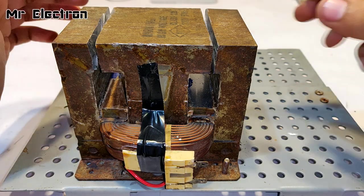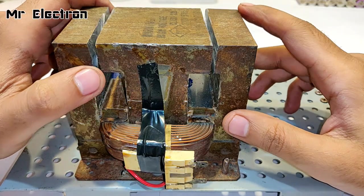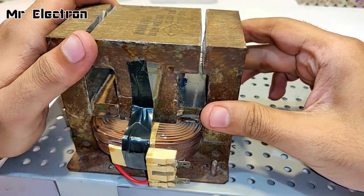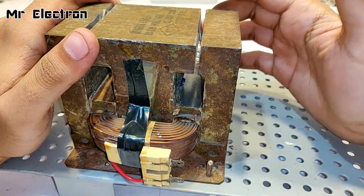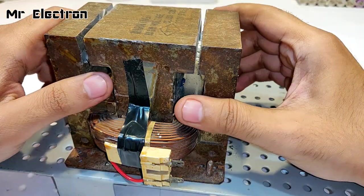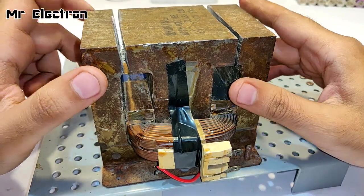So guys, as you already know that this was a microwave transformer. You can see that I have given a cut, a full cut on this side, and on this side you can see there is a full cut.